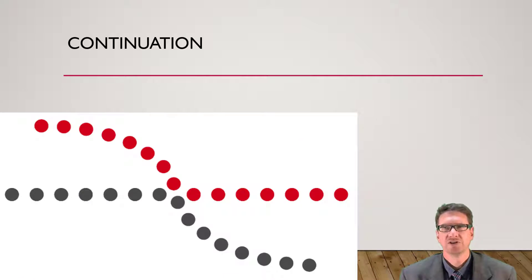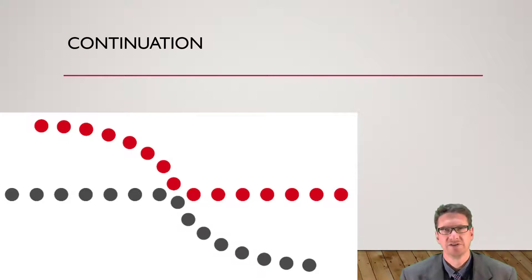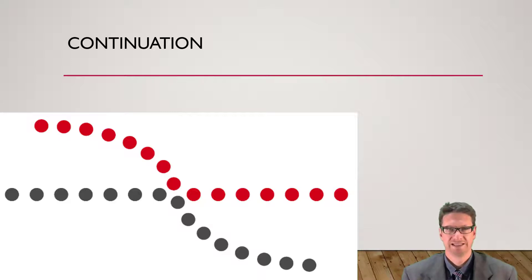The law of continuity says the human eye will follow the smoothest path regardless of how the lines were actually drawn. The eye just rips straight across the page and follows that path because they seem to follow each other — it's much smoother than bending at the middle. That's continuation.